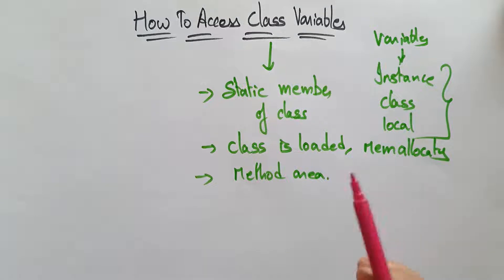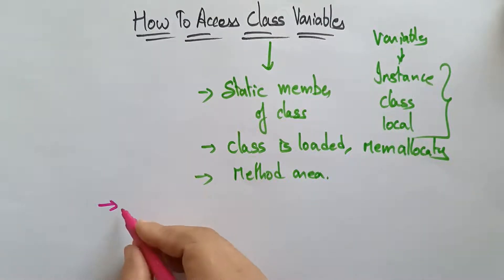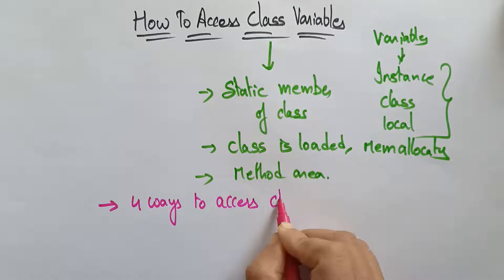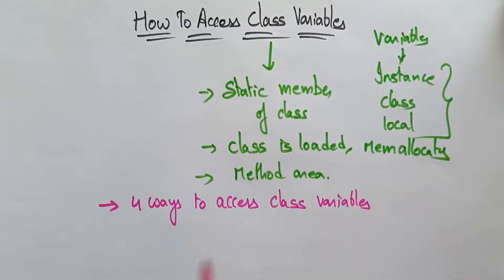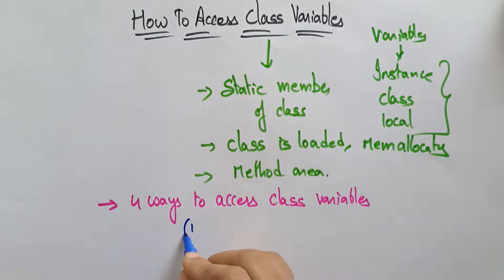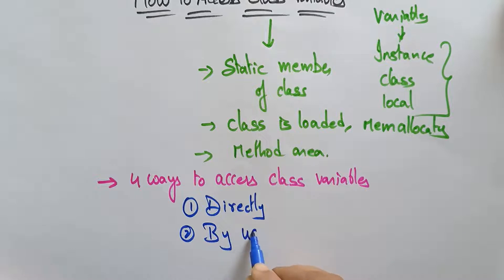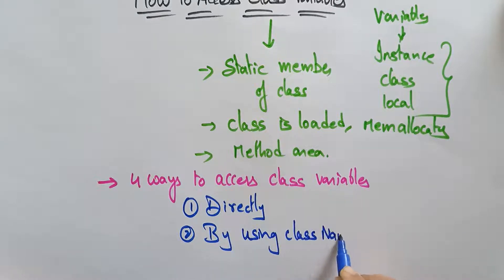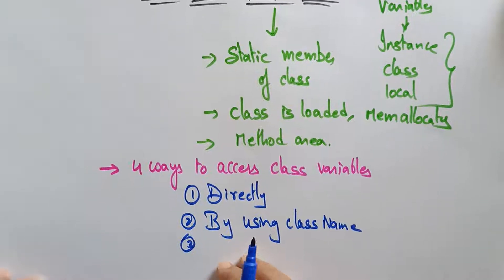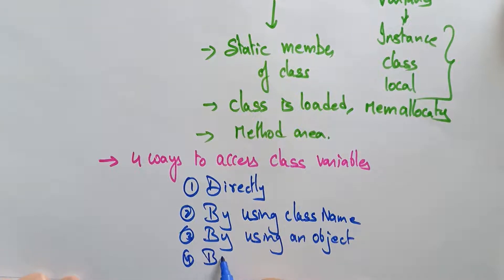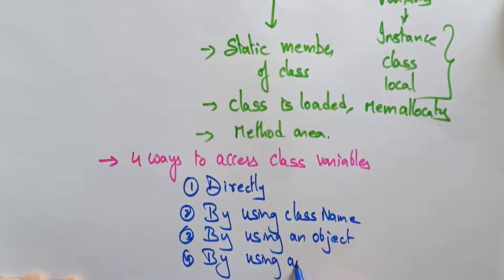Now let's see how to access class variables. There are four ways to access a class variable. One: directly. Two: by using class name. Three: by using an object. Four: by using an object reference.